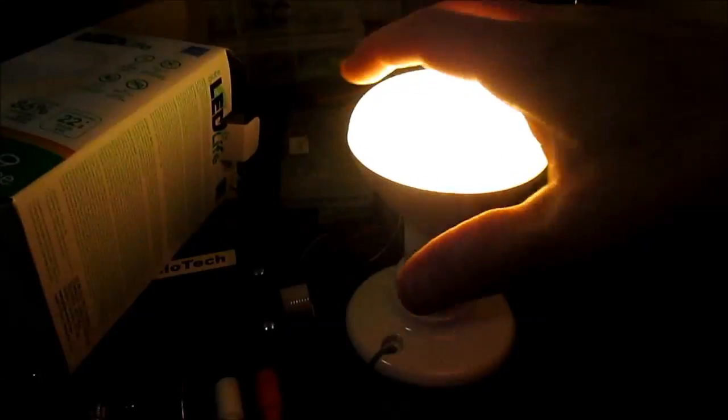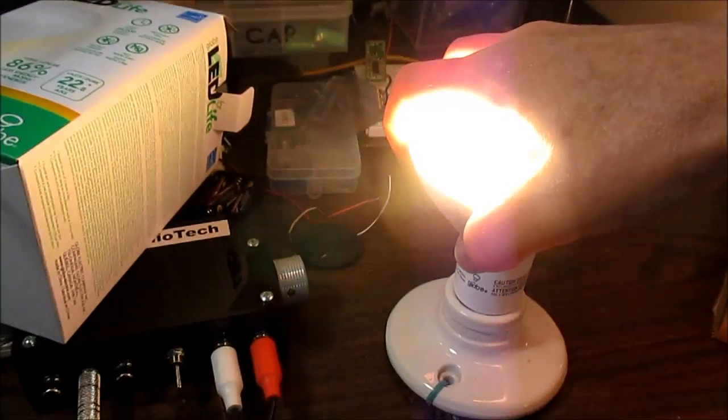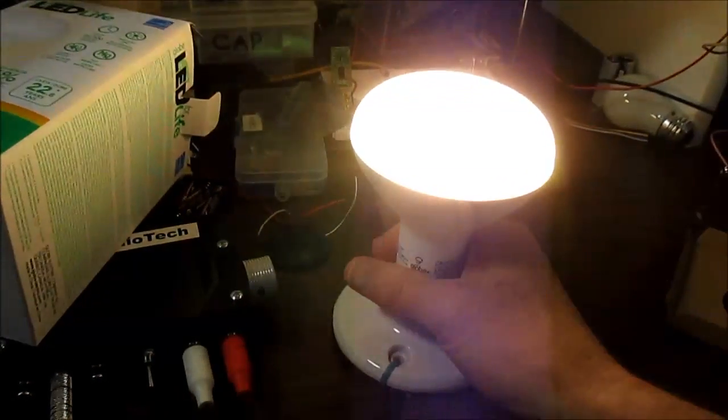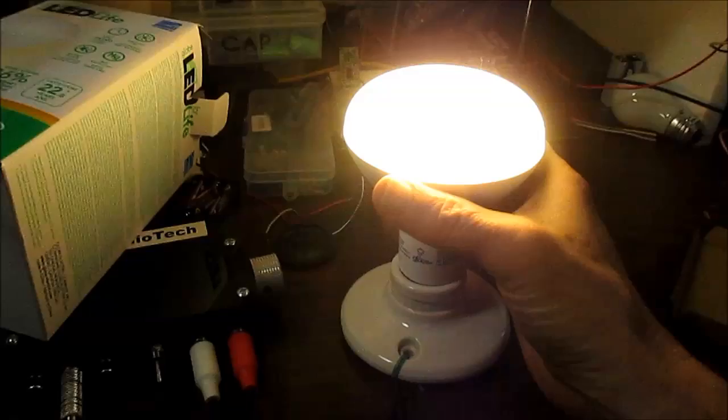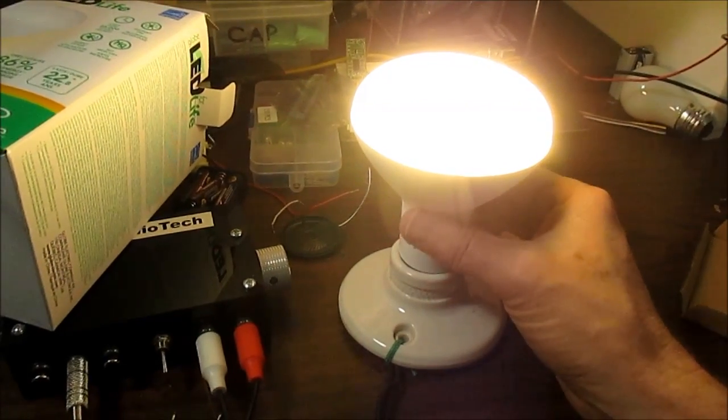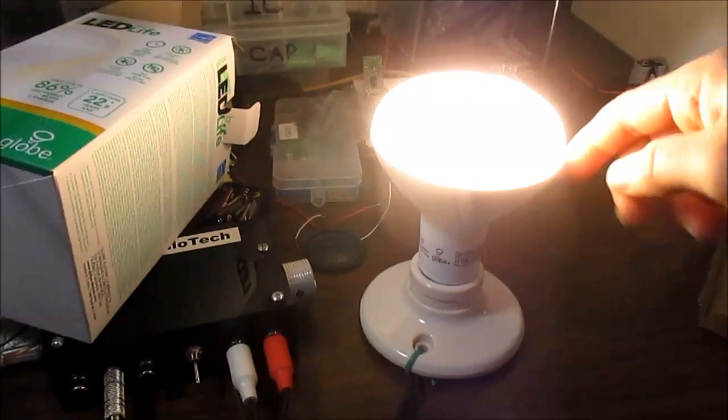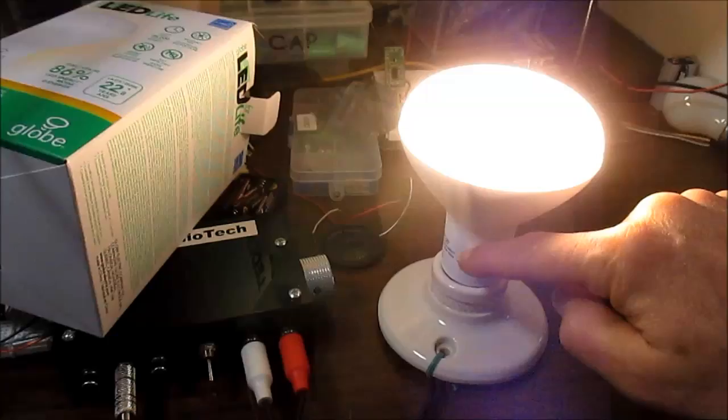After letting the bulb run for a while, the heat does build up around the top. I mean, it's still pretty cold. It doesn't warm up that much. And it hasn't even gotten warm at all down here. So they are using a smart design by putting the heat sink up here away from the electronics.